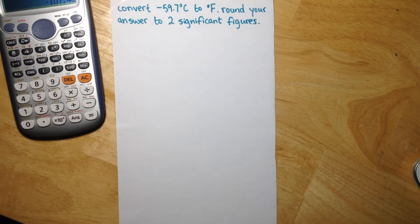We are asked to convert negative 59.7 degrees Celsius to degrees Fahrenheit and to round our answer to two significant figures.